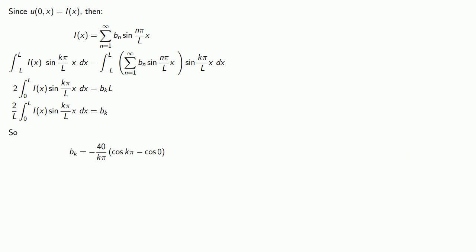Now the actual value of bk is going to depend on the value of cosine of k pi, and that is going to depend on whether k is odd or even. If k is odd, then the cosine of an odd multiple of pi is going to be minus 1. Cleaning this up a little, we find that bk is going to be 80 over k pi.